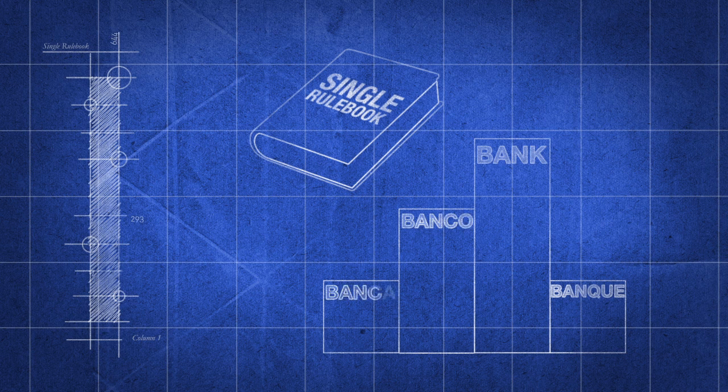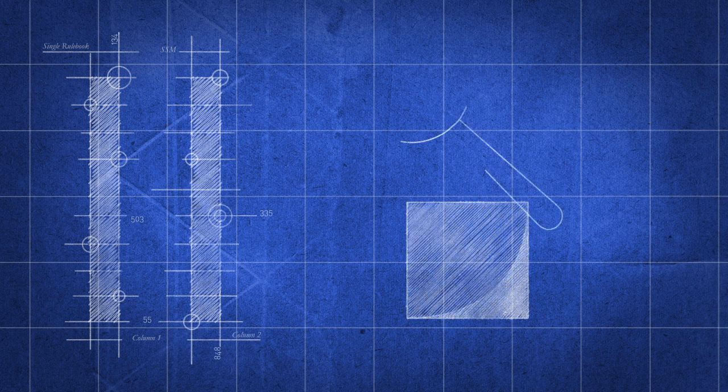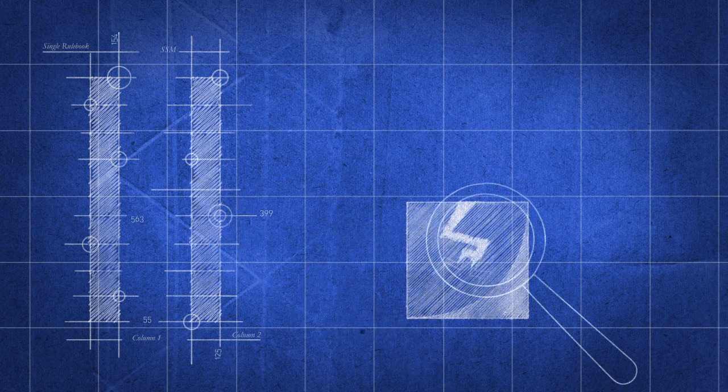The first pillar of the banking union was a single rule book for European banks, designed to harmonize banking regulation across the European Union. The second pillar was the single supervisory mechanism to supervise banks in the eurozone and spot problems before they got too big to solve.